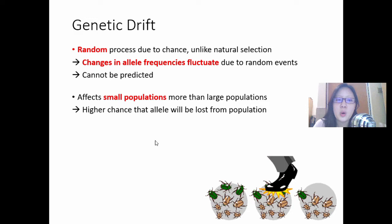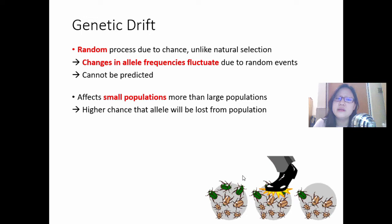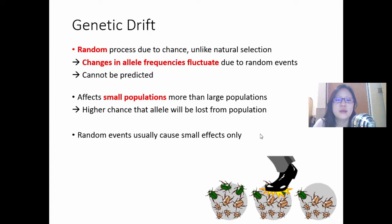When the population is small, there is a higher chance that the allele will be lost from the population — a higher chance that wiping out a few individuals may cause a loss of that allele. For example, just stepping one more step could cause all three beetles to die and be lost from the population, wiping out all the green alleles. Whereas in a large population, you would have to stamp out a lot more.